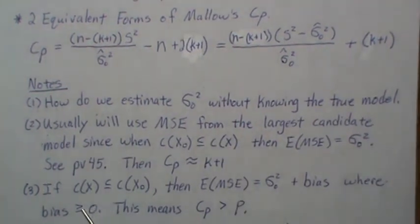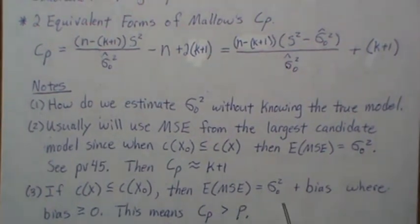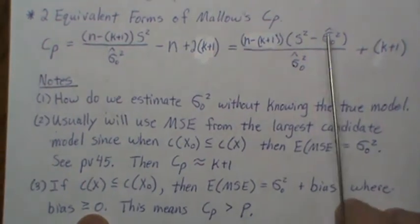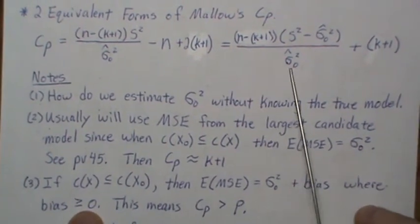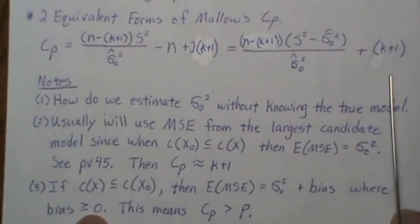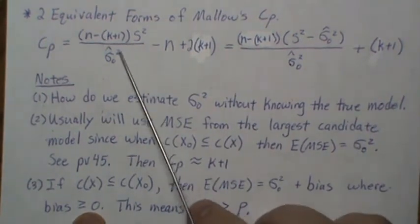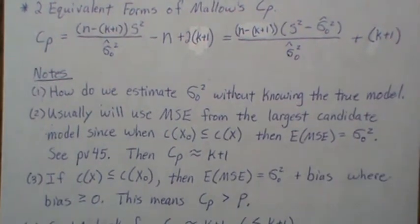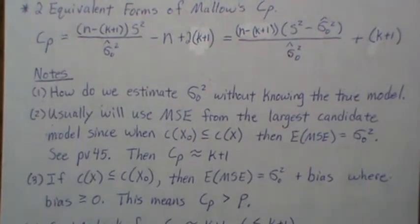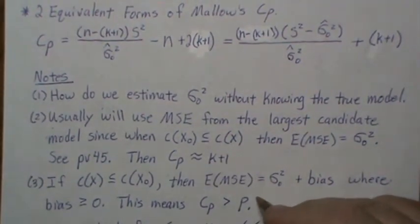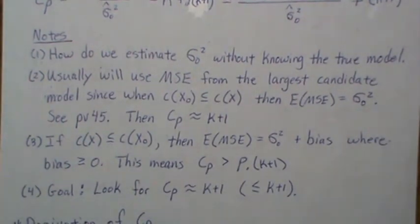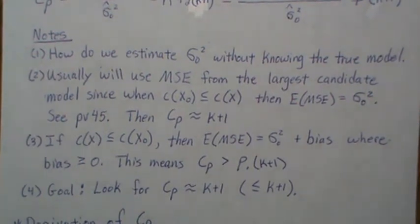When we underfit, the expected value of the mean square error is biased upwards — it has a positive bias. So that term is going to be a positive number, making CP greater than the number of beta parameters, often denoted p or k+1. Therefore, the goal is to look for Mallow's CP that is approximately equal to or slightly less than the number of beta parameters. That's how you choose a model using Mallow's CP.